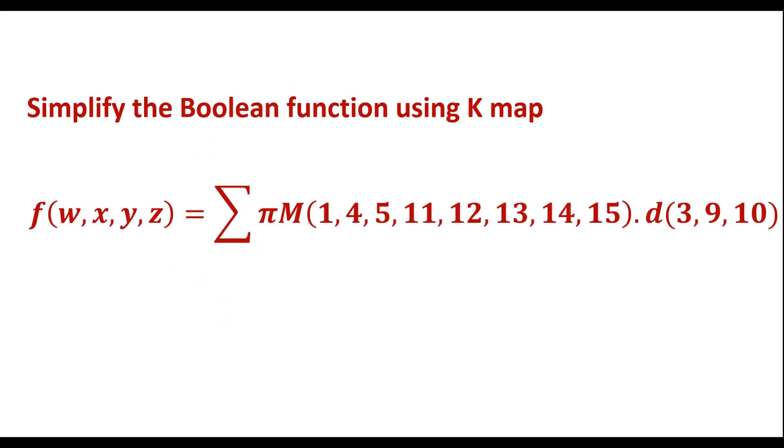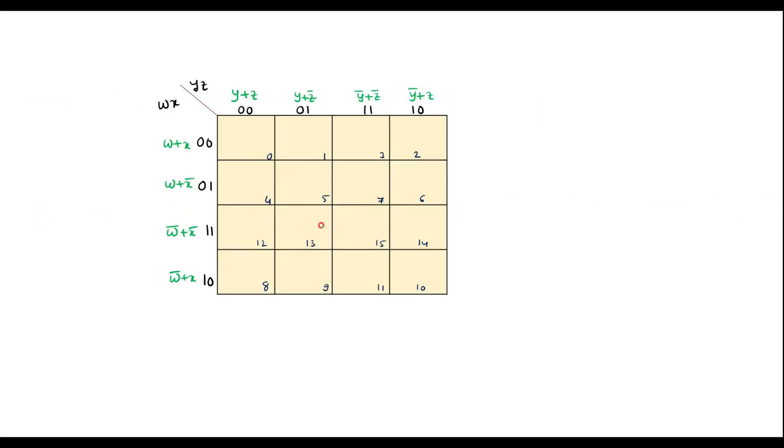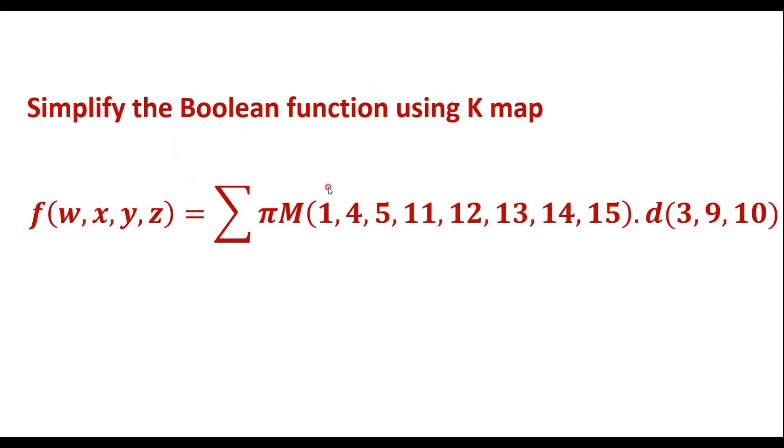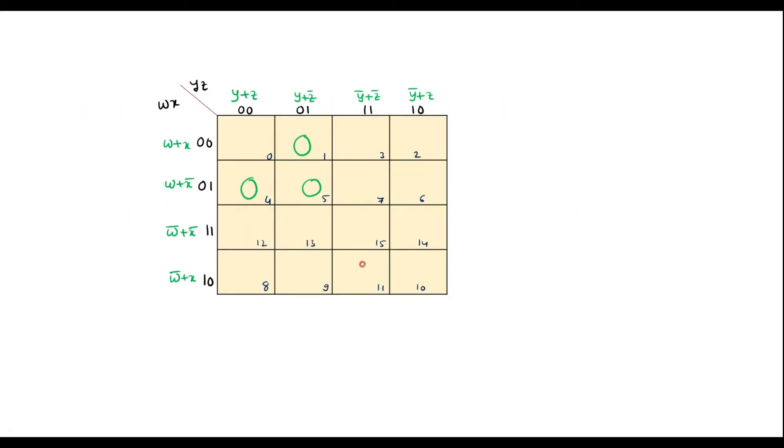So now, in these cell numbers, we have to enter 0. It is 1, 4, 5, 11, 12, 13, 14, and 15.